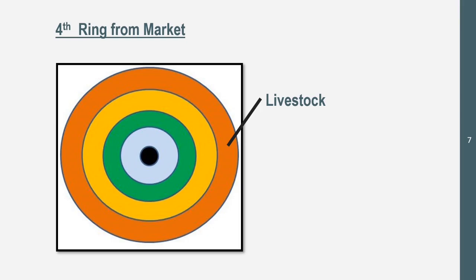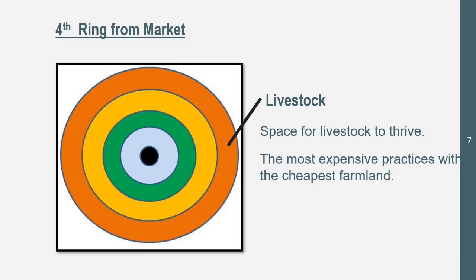Our fourth ring from the market is livestock, our living animals. They need space to thrive, and the farther away from the market, the more land there's going to be. This is where the most extensive practices are practiced with the cheapest farmland. Extensive agriculture has bigger land. They need more land for the livestock to thrive. This is called ranching.